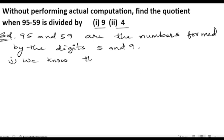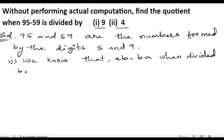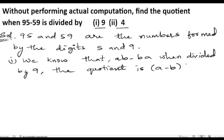We know the rule: ab minus ba, when divided by 9, the quotient is a minus b. So because of this rule.